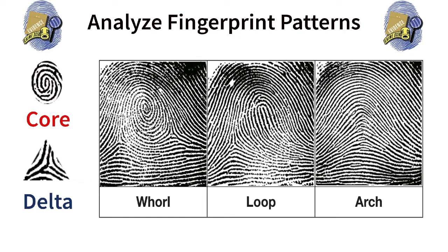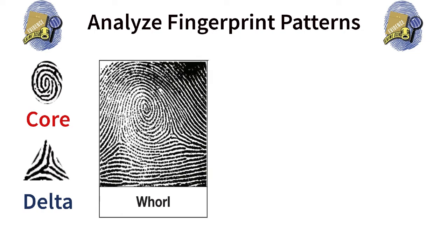Let's look at each type of pattern in more detail beginning with whorls. A whorl has a circular ridge arrangement forming a pattern that spirals outward. Looking close, you can see that a whorl has one core and two deltas.